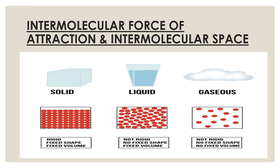The volume of liquid is fixed but the shape is not fixed. If we transfer liquid from a glass to a bucket, it will take the shape of the container. If you throw the liquid on the floor, it will flow freely. That is why liquid does not have a fixed shape.